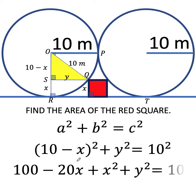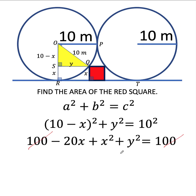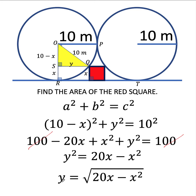Expand this square of binomial as 10 squared, or 100, minus twice the product of 10 and x — so we have minus 20x — plus the square of x. Copy all the rest. Subtract 100 from both sides and solve this equation for y squared to arrive at y squared equals 20x minus x squared. Then let's take the square root of both sides to find the value of y. Since y is the length of this side, y must be positive, so we just take the principal square root of 20x minus x squared.